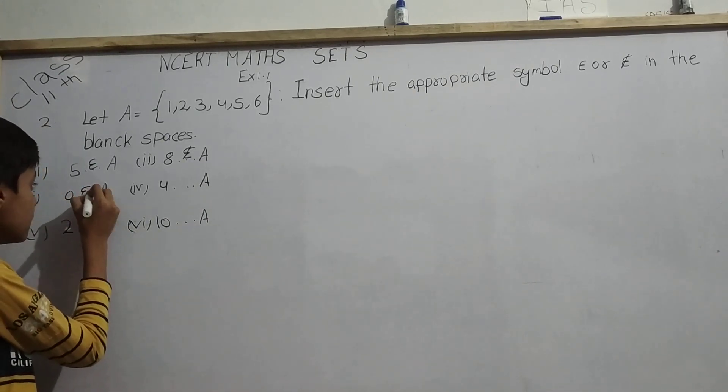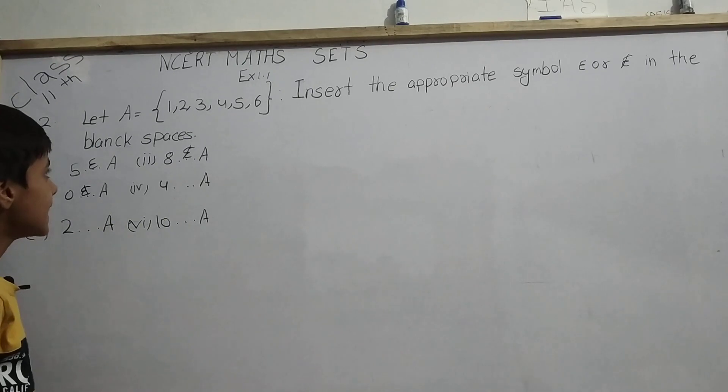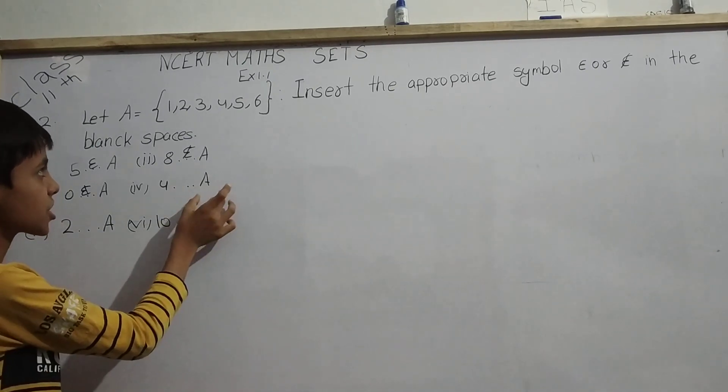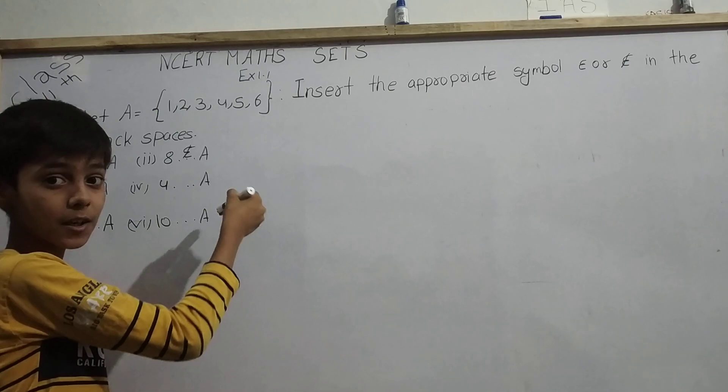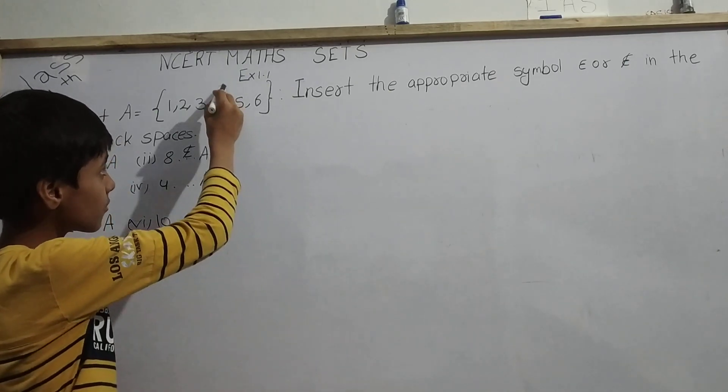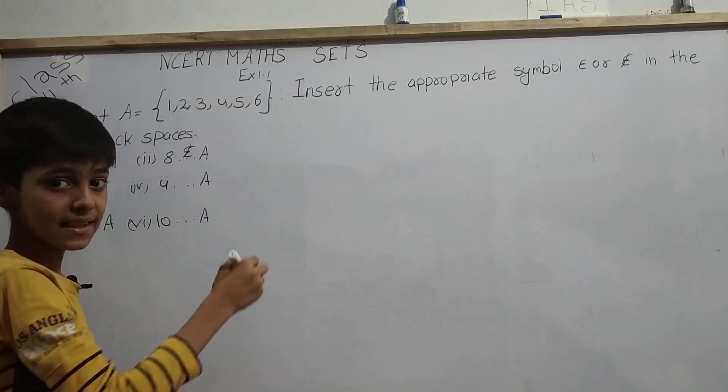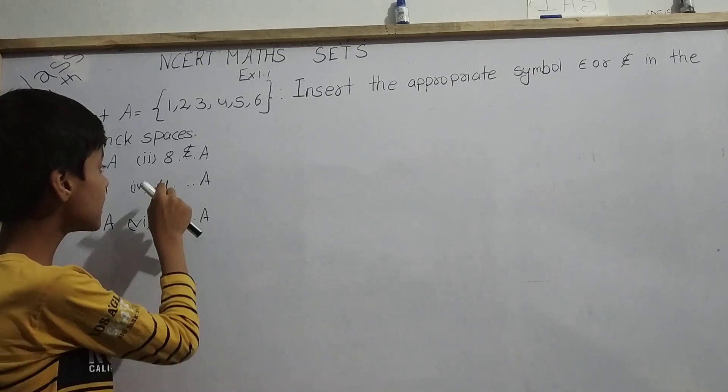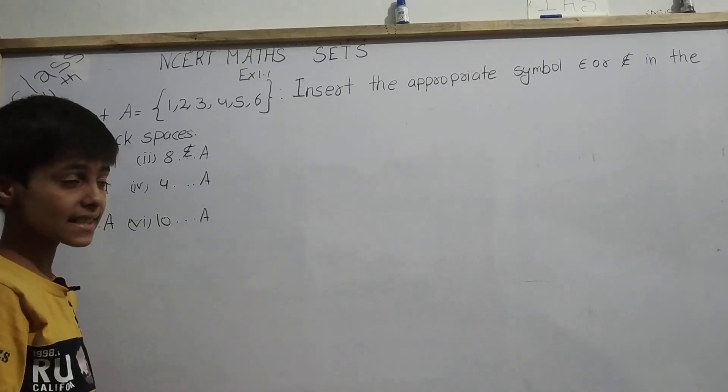Next is 4 dash A. Here we have 1, 2, 3, 4, 5, 6 where we can see 4. If 4 is present in the set, it means 4 is a number that belongs to that set.